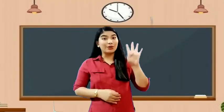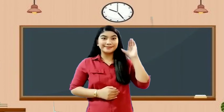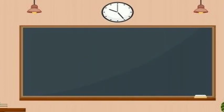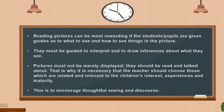What are the four levels that we can use in reading pictures? Enumerate level, descriptive level, interpretive level, and integrative level. Reading pictures can be most rewarding if students and pupils are given guides as to what to see and how to see things in the picture. They must be guided to interpret and to draw inferences about what they see. Pictures must not be merely displayed — they should be read and talked about. That is why the teacher should choose those which are related and relevant to children's interests, experiences, and maturity, to encourage thoughtful seeing and discourse.